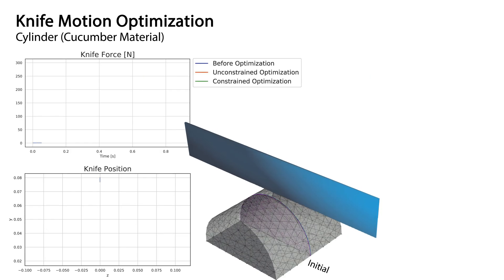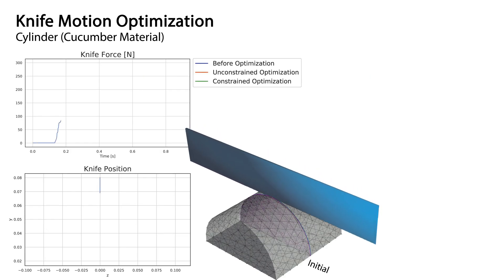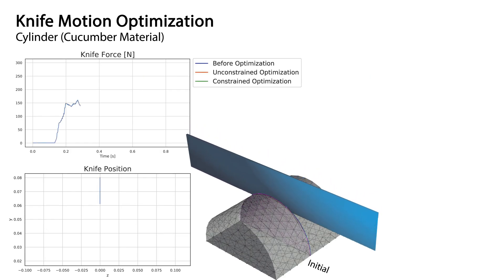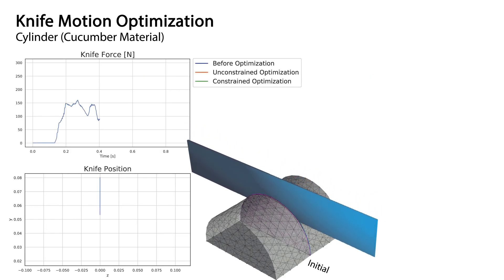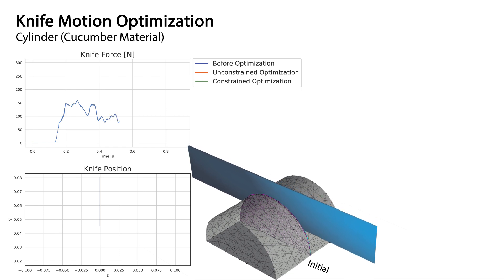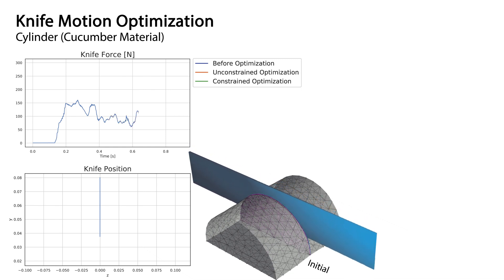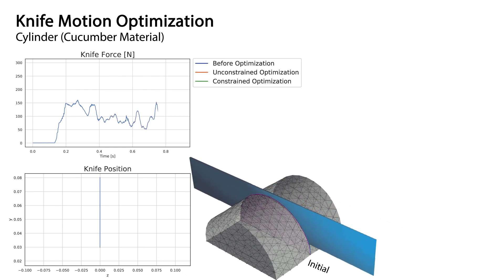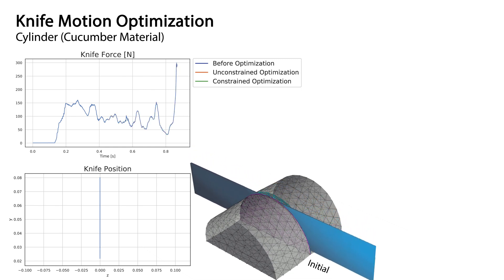At the start of the optimization, the initial motion is a straight downward pressing trajectory. We optimize this trajectory with the objective to minimize the mean force on the knife and penalize the time it takes to cut the object.